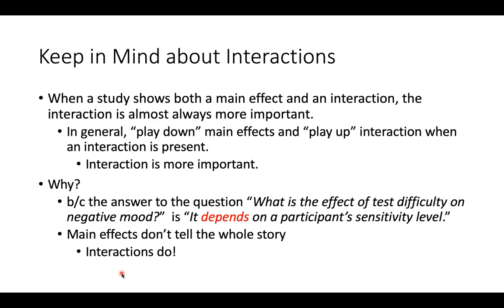When we encounter examples with various combinations of main effects and interactions, the interaction is usually the most important piece. That doesn't mean we ignore main effects — we still report them, they're real, they matter. But the whole purpose of doing a factorial design is to get that interaction. So if you get an interaction, we want to play up the interaction and maybe play down the main effects. It's the meat and potatoes of the effect, and where we want to focus our energy communicating the finding.